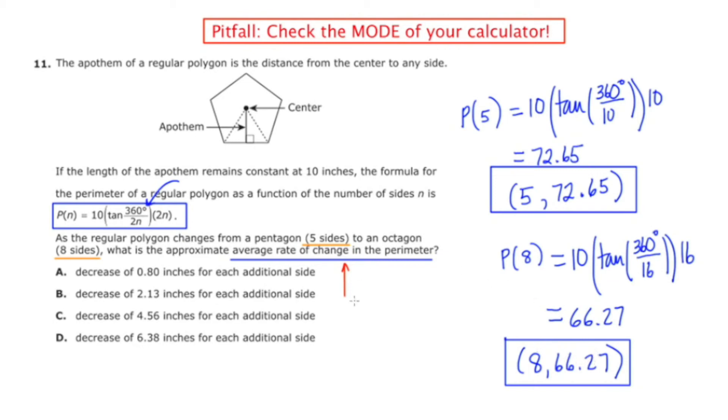And the average rate of change, this signifies to me that you're going to treat it like a slope situation, which is rise over run, so I'm going to do the change in y over the change in x. So I'm going to do 72.65 minus 66.27 all over 5 minus 8.